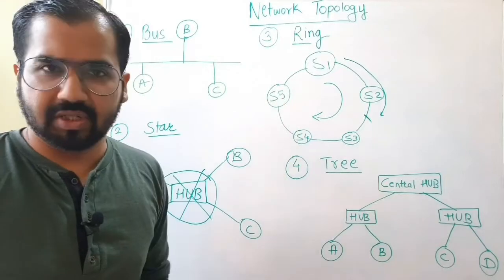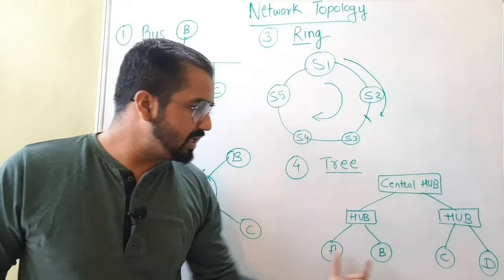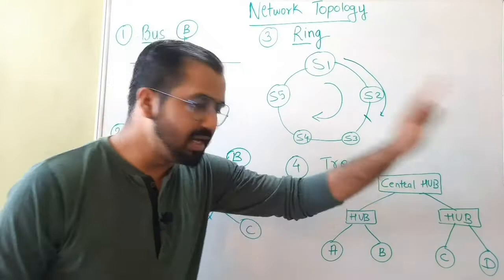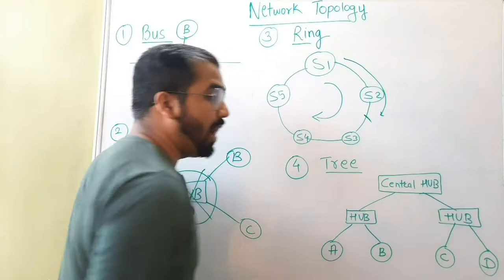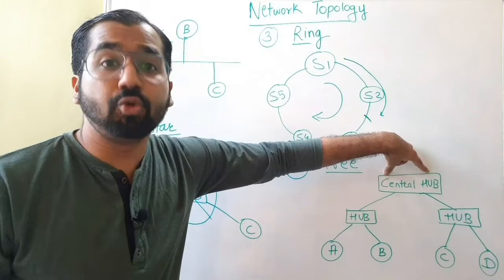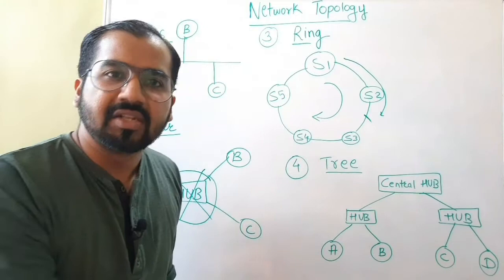In tree topology, we can see the structure as a tree — similar to what you would have studied in data structures. There is a root node, some leaf nodes, and some intermediate nodes. This tree topology works in a similar fashion: we have a central main hub, which you can think of as the root node of your tree. This central hub can be connected directly to systems, devices, or nodes of your network.